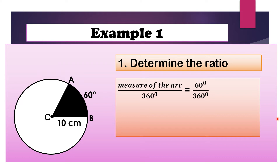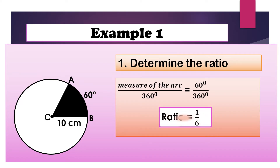Simplify. The greatest common factor of 60 and 360 is 60. We cancel the degree units. 60 divided by 60 is equal to 1, and 360 divided by 60 is equal to 6. Therefore, the ratio is 1 over 6.